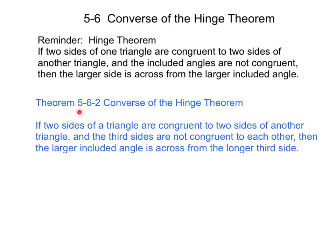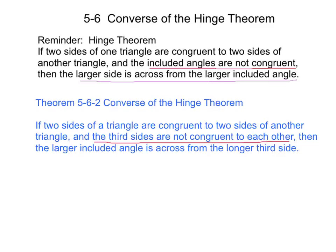We have theorem 5-6-2, which is the converse of the hinge theorem. What this says is that if two sides of a triangle are congruent to two sides of another triangle, and the third sides are not congruent to each other, then the larger included angle is across from the longer side. Notice these two are very similar but almost exact opposites — the hinge theorem involves unequal included angles, while the converse involves unequal third sides. That is what converse means: the exact opposite.